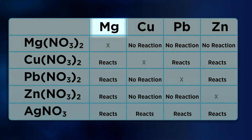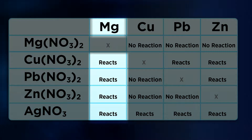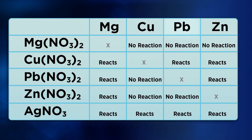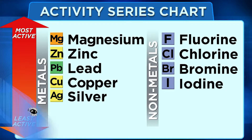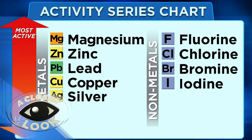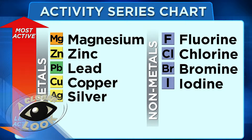In our lab, students conducted investigations to help us learn how to predict the products of a single displacement reaction using an activity series. There's also a closer look video in Unit 5 that explains exactly how to predict and name the products of any chemical reaction.